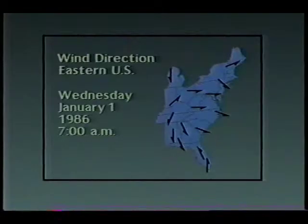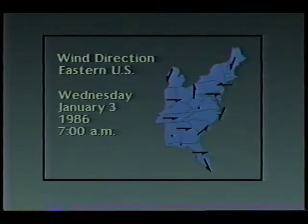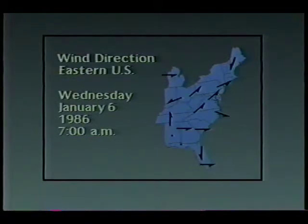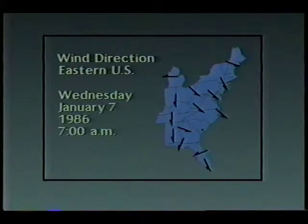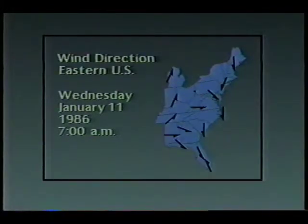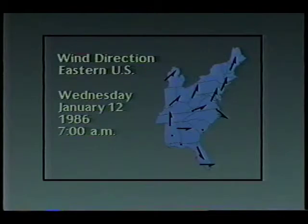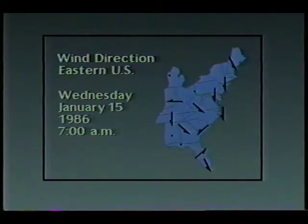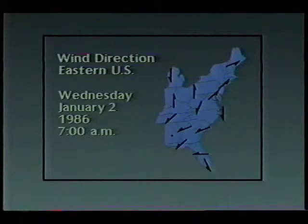By varying the orientation of symbols we can represent nominal-level data like wind direction in an animated map. The rate at which orientation changes may be used to connote the variability of the phenomena or the sampling resolution at which the data were collected.